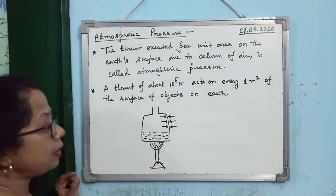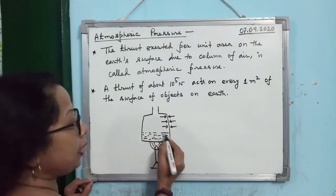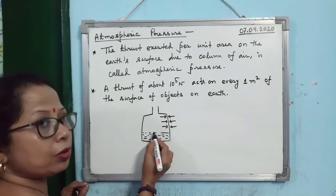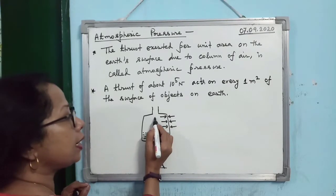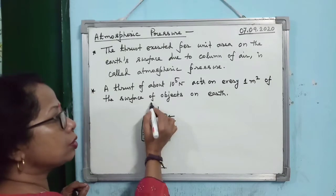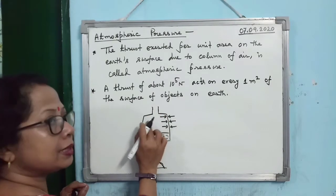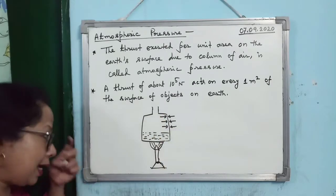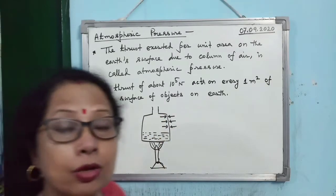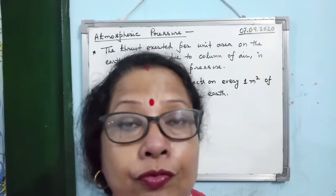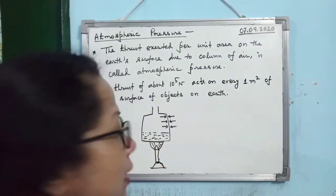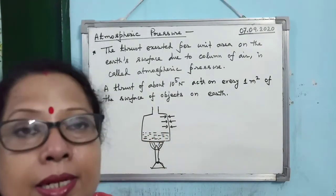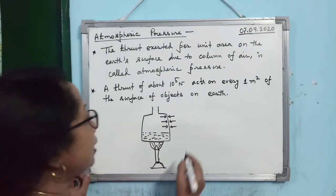First, heat the water so water vapour is produced. The water vapour pushes the air from inside out. Then this portion fills entirely with water vapour. Boil the water for a certain amount of time, then remove it from the Bunsen burner and close the tin.